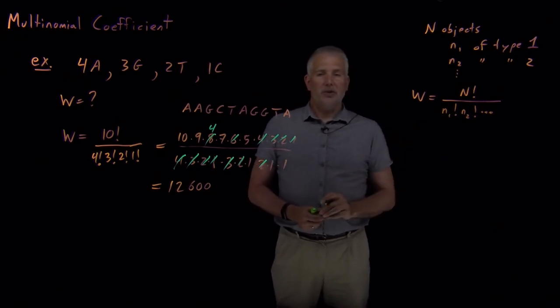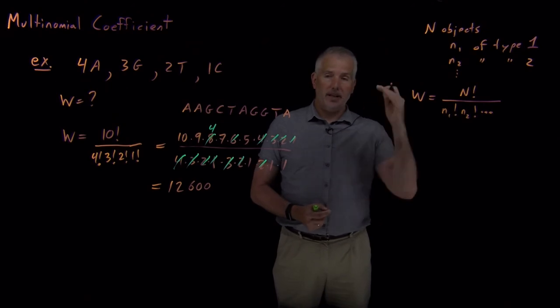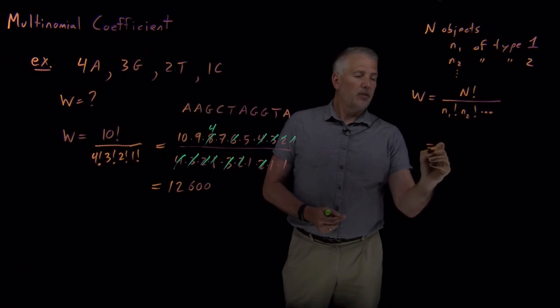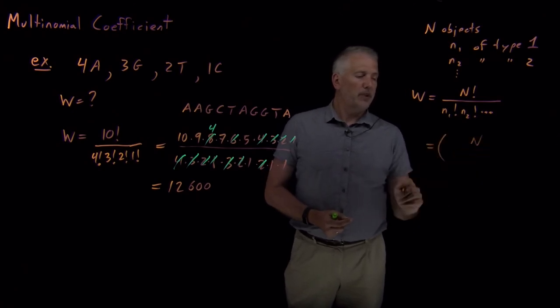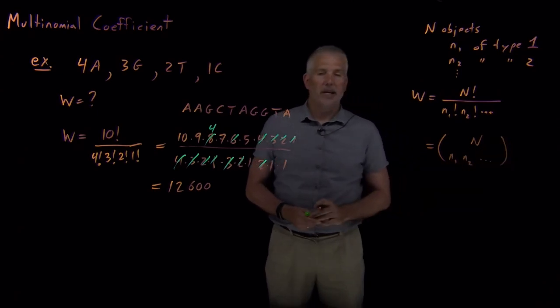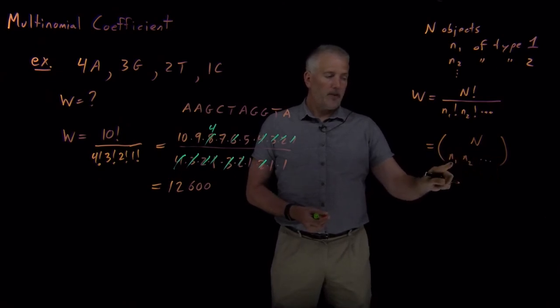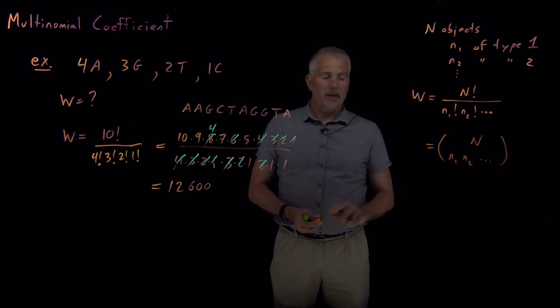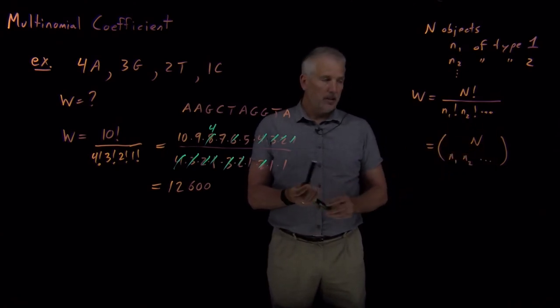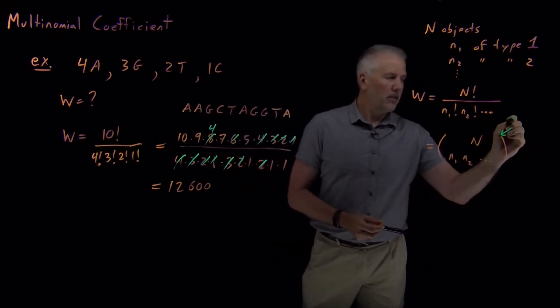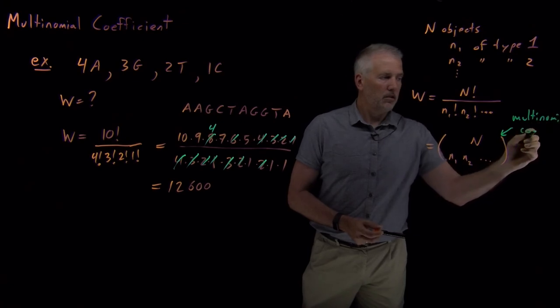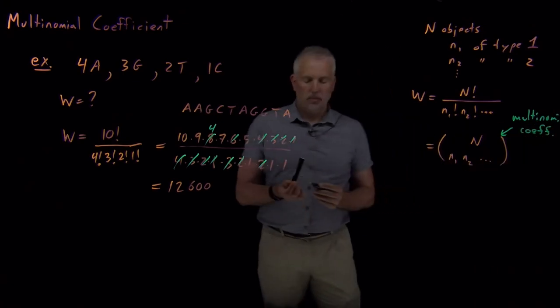The shorthand notation we can use, just like for the binomial coefficient we have n choose little n, the shorthand we can use to write down this multinomial coefficient is big N on top, these little n's on bottom: n1, n2, dot dot dot, as many of them as we have. Just put the little n's on the bottom for as many types of objects that you have, and that's our shorthand notation for the multinomial coefficient.